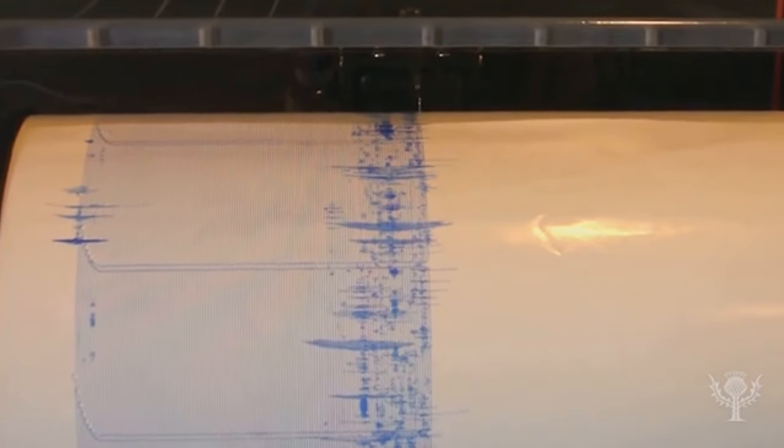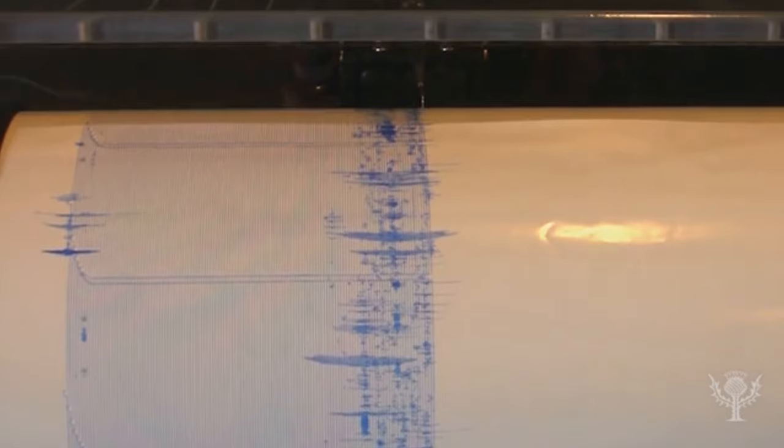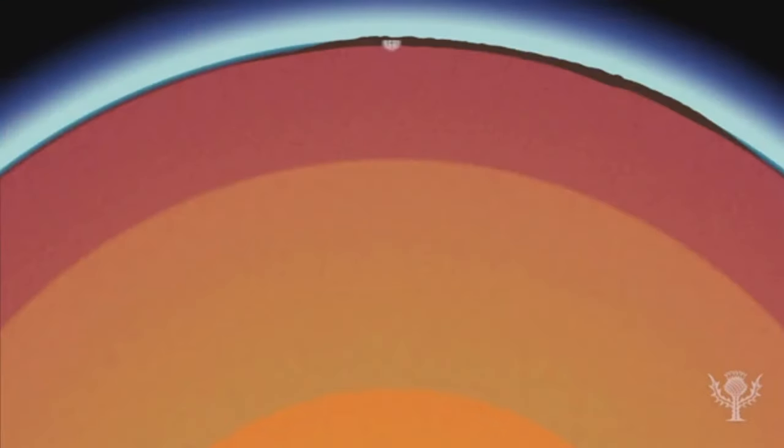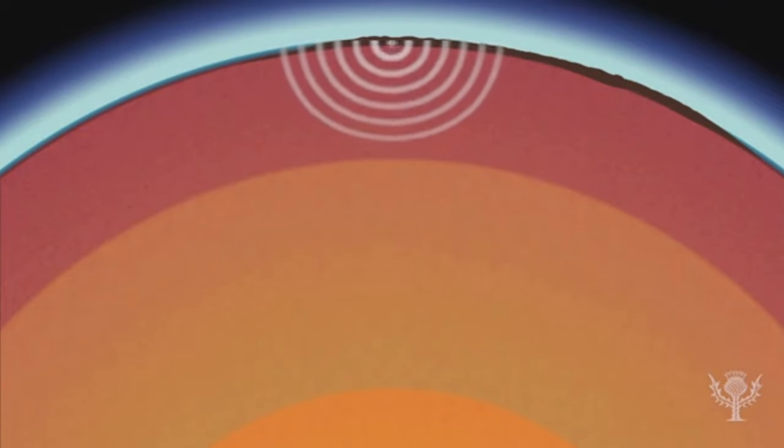This yields information that can help scientists learn not only about earthquake behavior but also about the structure of Earth itself. There are two broad classes of seismic waves: body waves and surface waves.